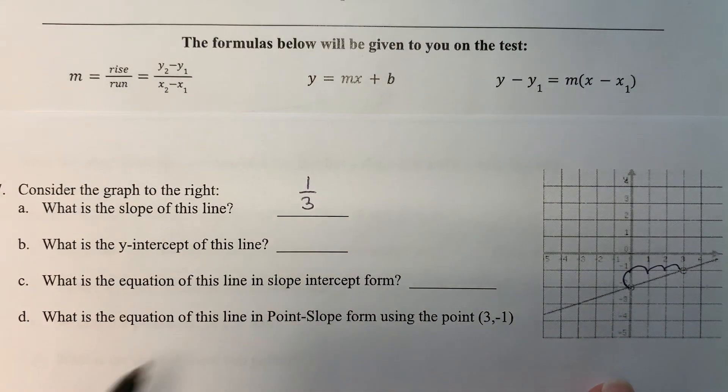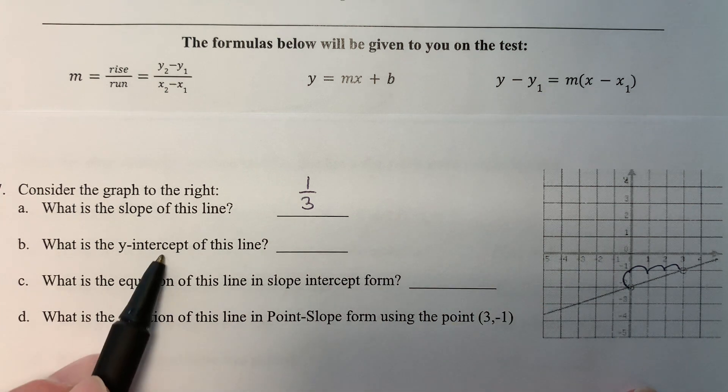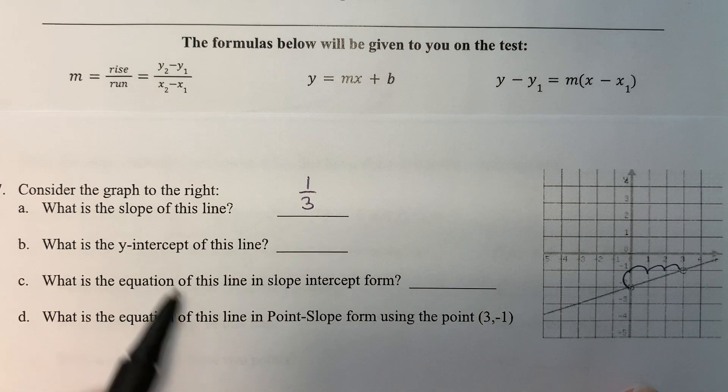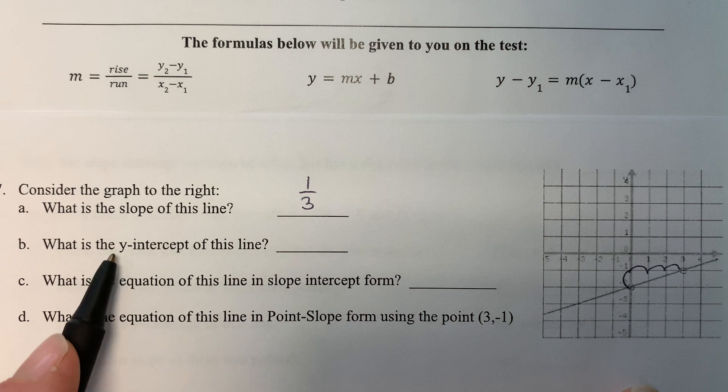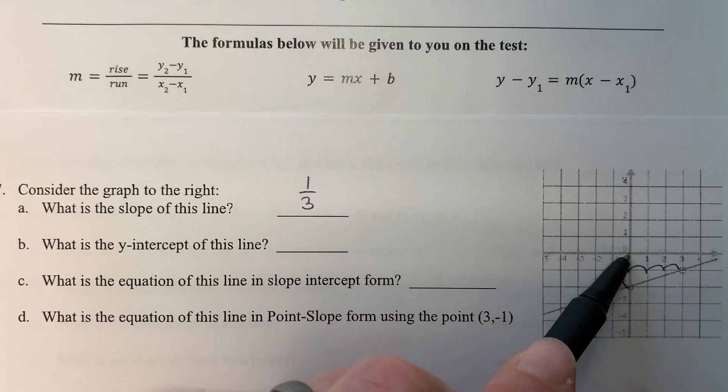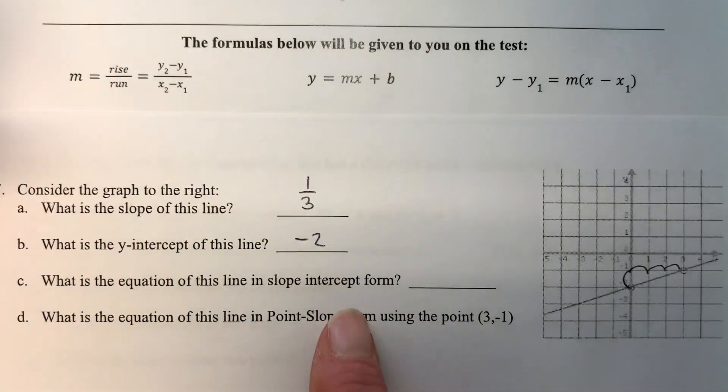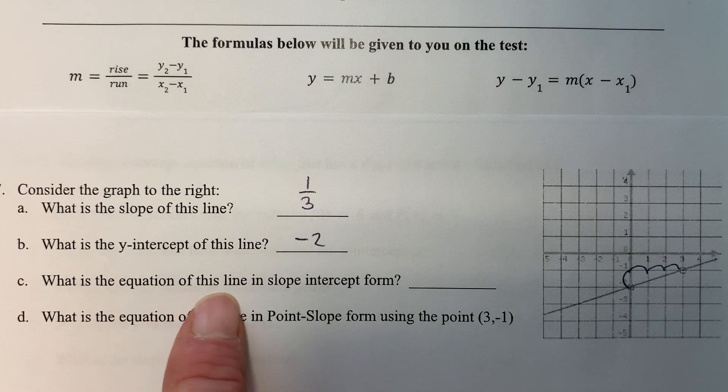What is the y-intercept of this line? The word intercept in math means to touch, so we want to know where does it touch the y-axis. This is the y-axis, and it touches it at negative two, so the y-intercept is negative two.